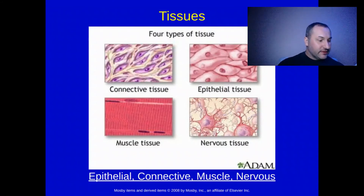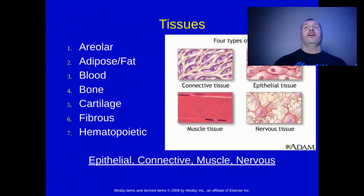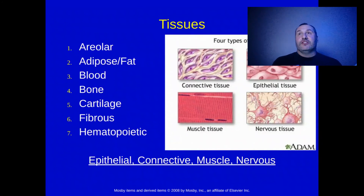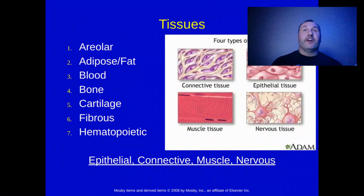There are four tissue types: connective, muscle, nerve, and epithelial. Connective tissues include areolar, adipose, blood — which is always interesting because we don't think of blood as connective tissue — bone, cartilage, and fibrous tissues. Hemopoietic refers to the development of red blood cells.